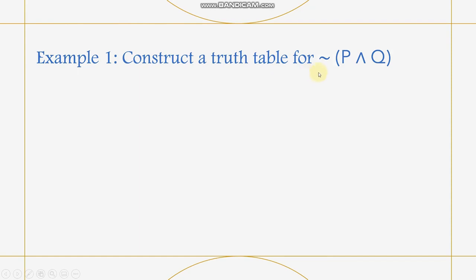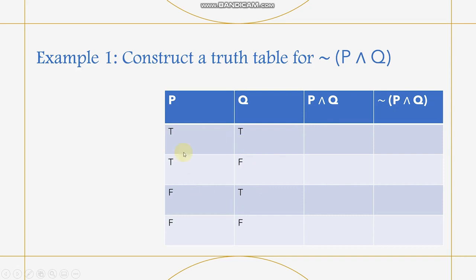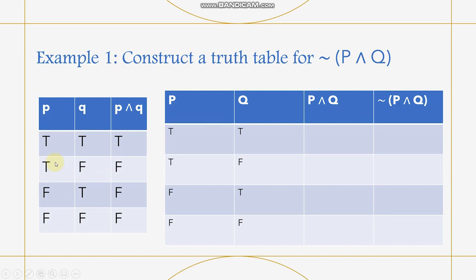For the first example, construct a truth table for the negation of P∧Q. So we have a negation sign and a conjunction sign. We will have 4 rows and 4 columns. Since we have propositions P and Q, we will base on the conjunction table. When true and true, the result is true. When true and false, the result is false. When false and true, the answer is false. When false and false, the answer is false.